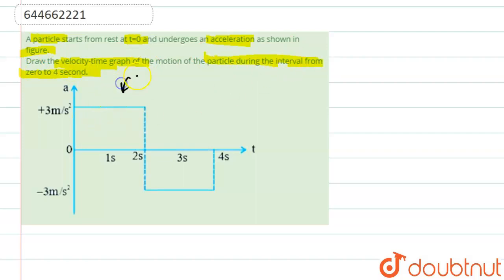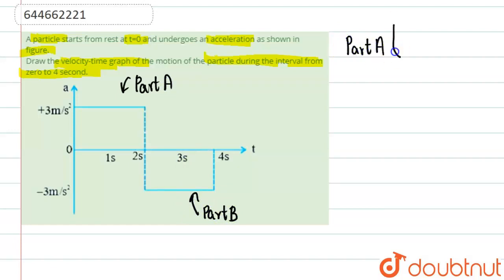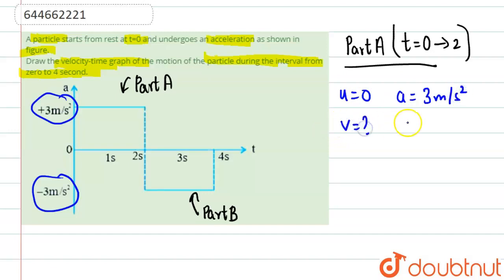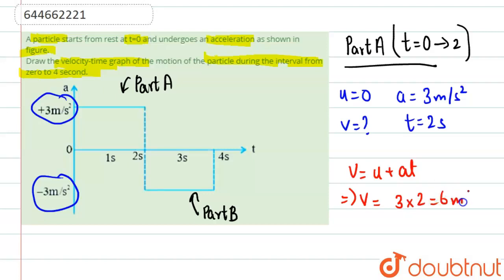We need to draw the velocity-time graph. Let's call this part A, for t equal to zero to t equal to two seconds. In part A, u is equal to zero. Since it is constant acceleration of plus three, we can use equations of motion. So u equals zero, a equals three meter per second squared, and t equals two seconds. Using v equals u plus at, we get v equal to three into two, which equals six meter per second.